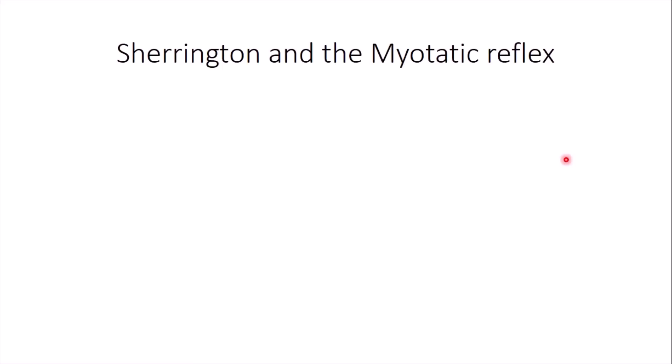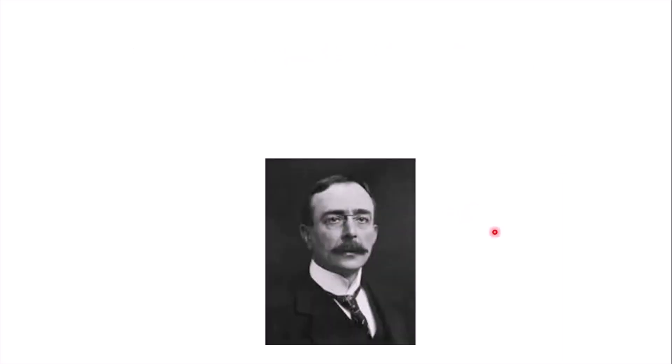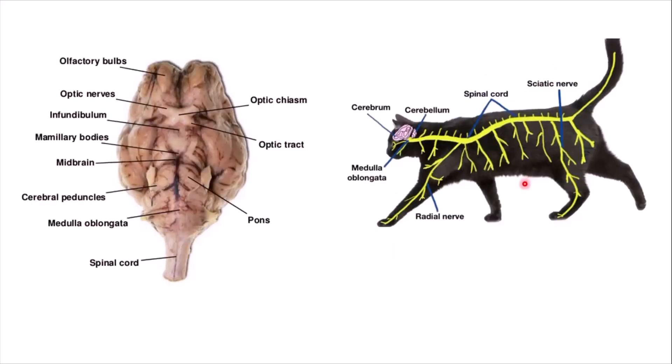Okay, so the real experiment probably didn't go down exactly like that, but it was close enough. This is the real Dr. Sherrington, and he was actually wondering what happens to a muscle when it is stretched. So what he did was he sectioned the spinal cord at the level of the medulla oblongata.